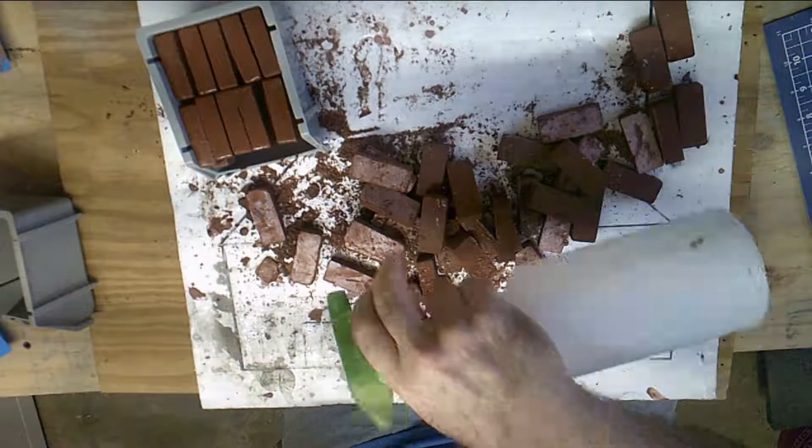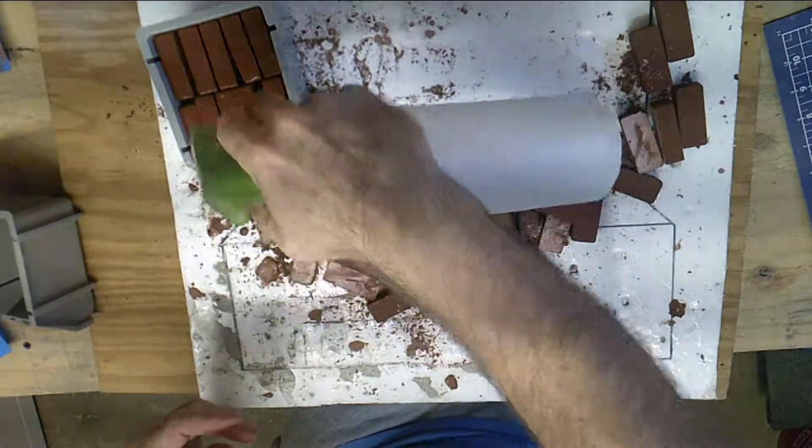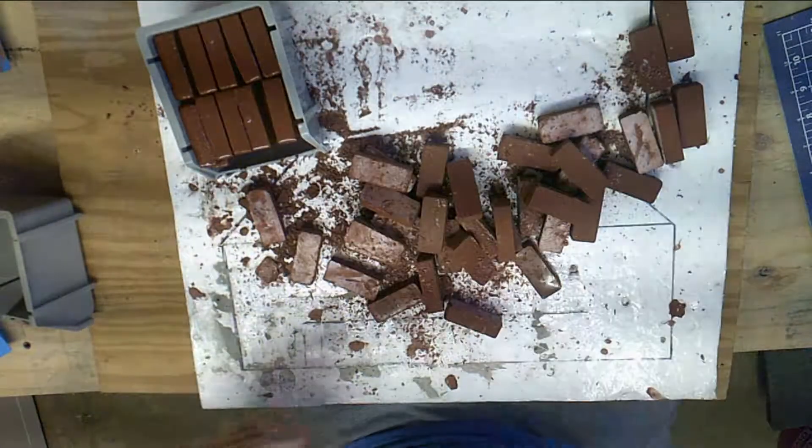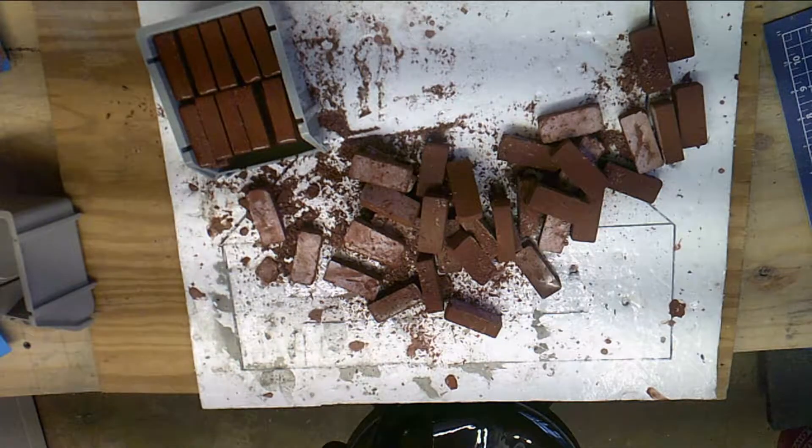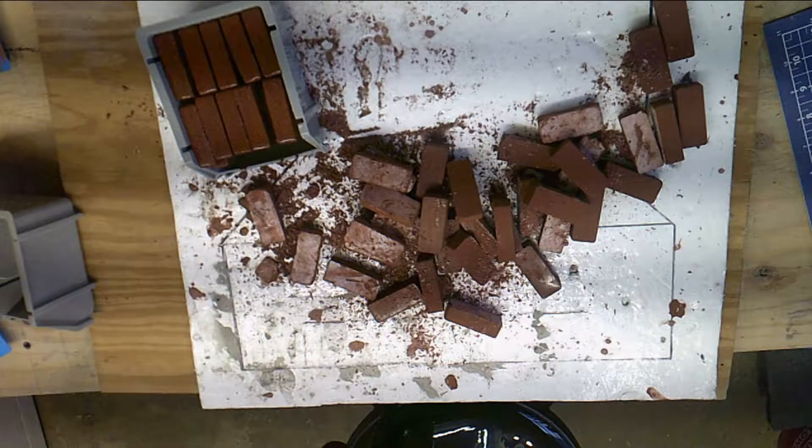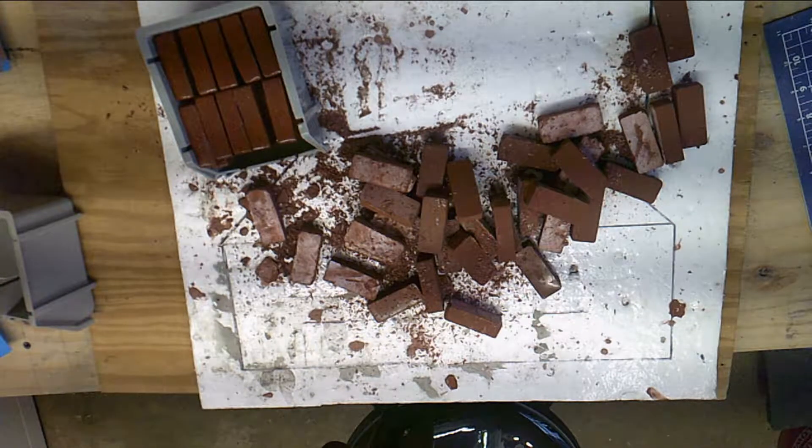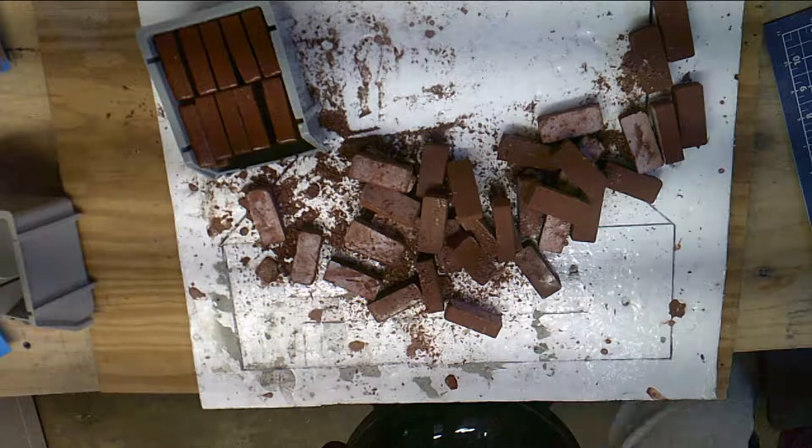I then spray the blocks with water and wrap them with plastic pallet wrap. The concrete will cure slower with the wrap on it. And slow cured concrete is strongest.